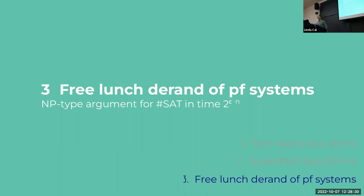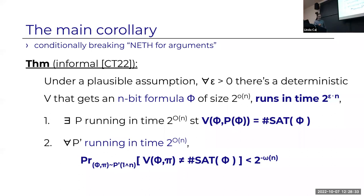What I want to show is one result from a recent paper about a free-lunch type of derandomization for proof systems. The main corollary—the most striking special case—is as follows. Under a plausible assumption, for every constant epsilon as small as you want, there's a deterministic verifier V that: gets as input a formula phi of polynomial size, runs in time two-to-the-epsilon-n, and satisfies two conditions. There exists an efficiently producible proof that makes the verifier print the precise number of satisfying assignments for the formula.